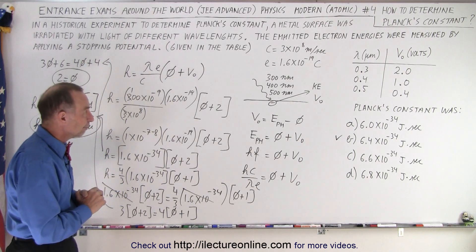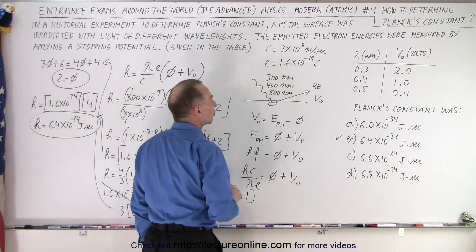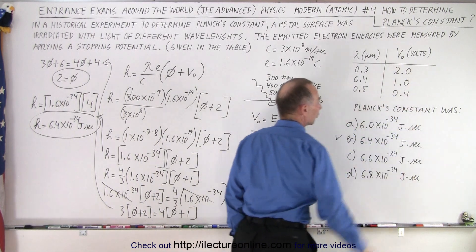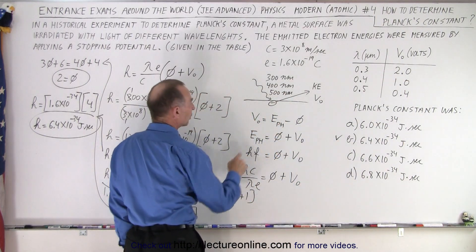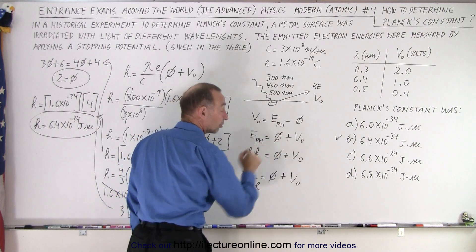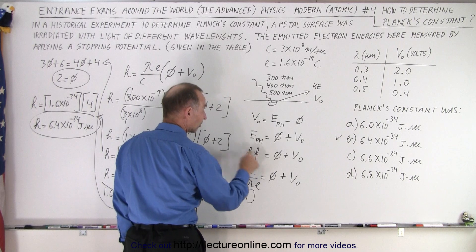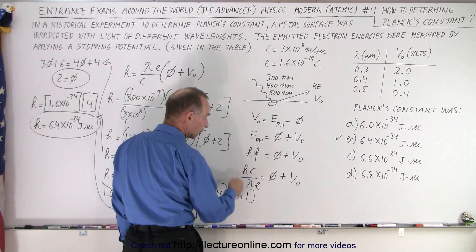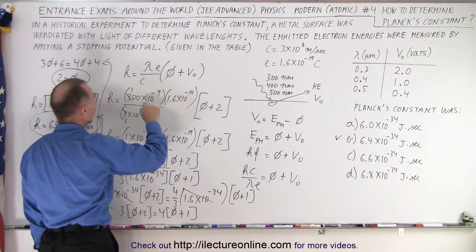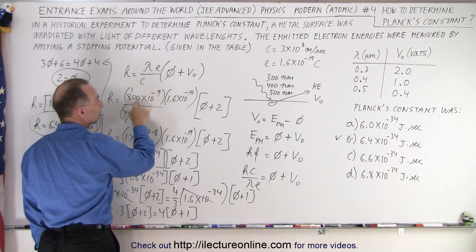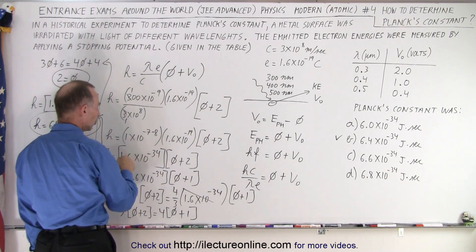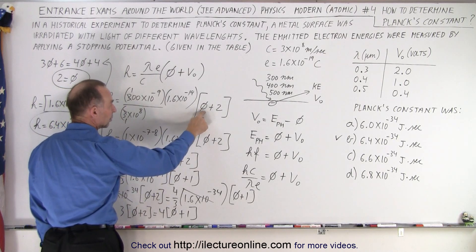Quick summary: incoming photons of 300, 400, and 500 nanometers correspond to stopping potentials of 2 volts, 1 volt, and 0.4 volts. The stopping potential equals the photon energy minus the work function, or equivalently, photon energy equals work function plus stopping potential. Photon energy is hc over lambda, and to convert to electron volts we divide by the charge of a single electron, giving h equals lambda times e over c times the quantity work function plus stopping potential, which simplifies to 1.6 times 10 to the minus 34 times (work function + stopping potential).